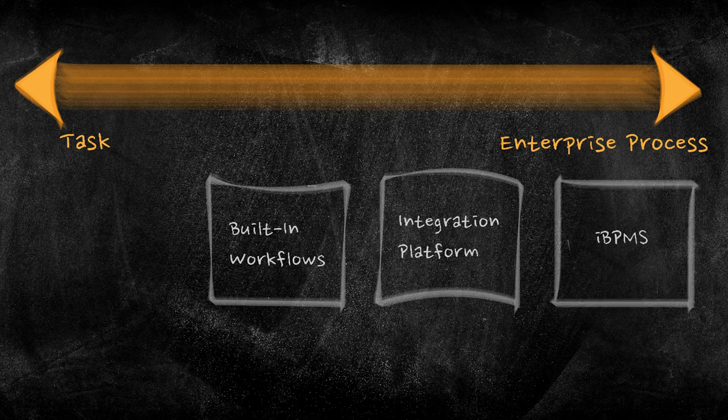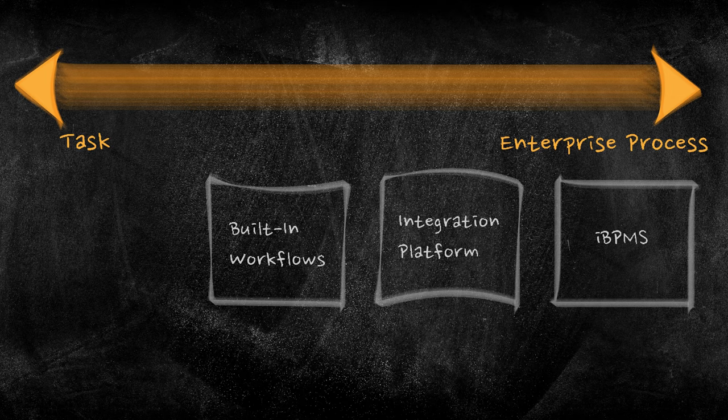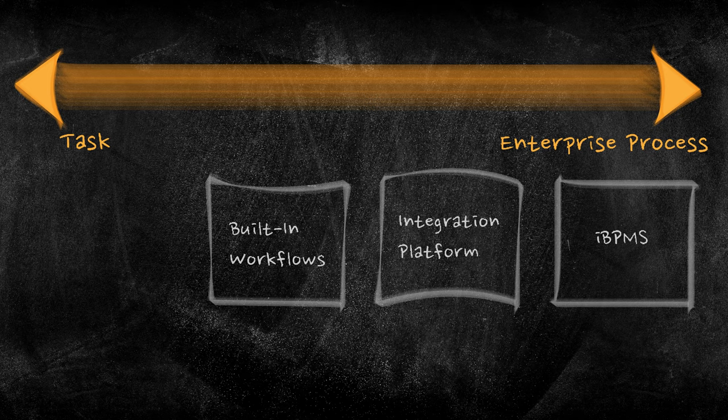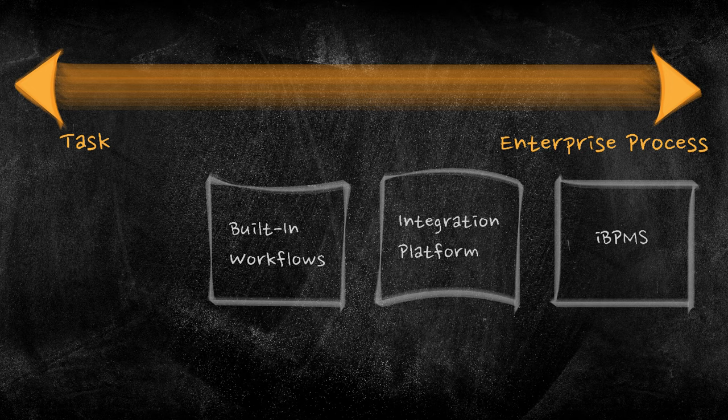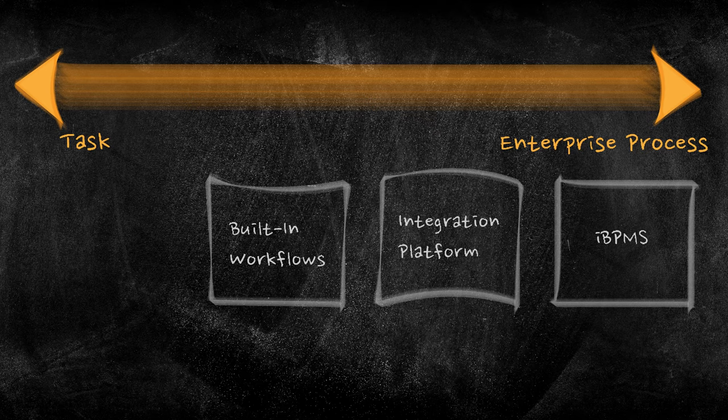The third category is what is referred to as Integrated Business Process Management Systems, or IBPMS for short. These platforms offer a faster, more agile development environment while continuing to focus on enterprise-wide process discovery, visualizations, and monitoring. IBPMS is essentially a combination of low-code application development, an integration platform, and process workflows all in one single package.